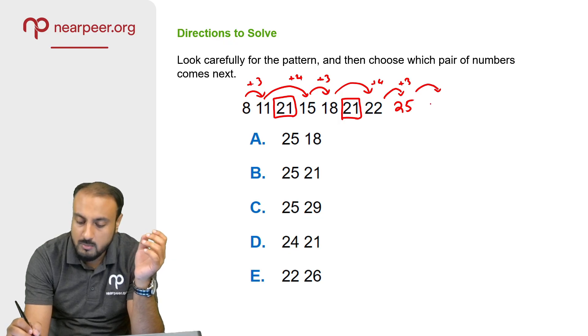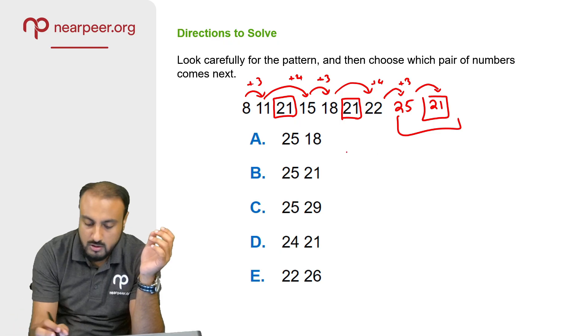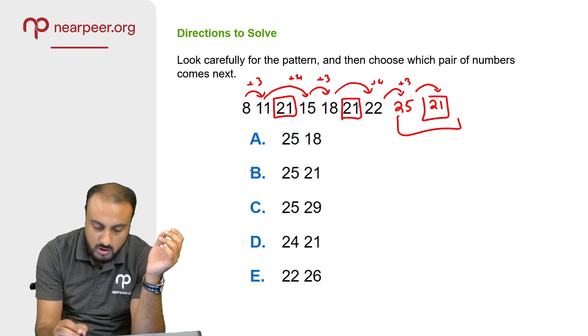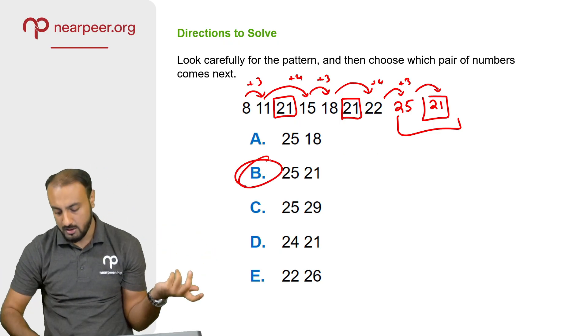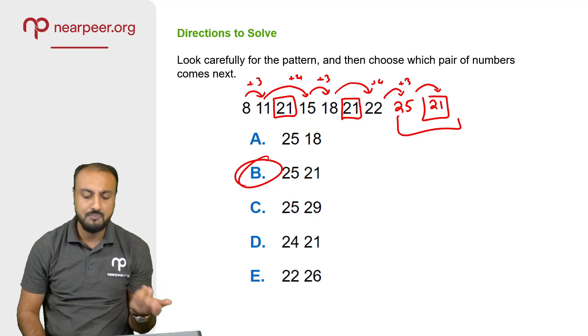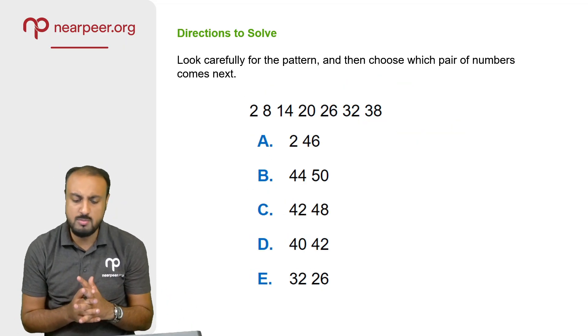The next number is the dummy variable. We have 21. So 25 and 21 — that is the answer. Simple. Now pause the question and try to solve it yourself.